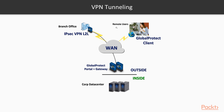Our other option in VPN tunneling is remote access VPN. In this case, you have users — for example, someone working from anywhere who needs to establish connectivity to the corporate data center where all application servers are hosted. We need to make sure her connection over the internet is completely encrypted and secure, so we don't have a man-in-the-middle or someone sniffing our traffic. This requires the end user to have a client — in Palo Alto's case, Global Protect.